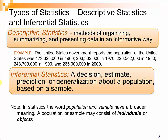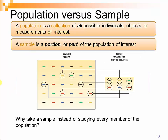Perhaps a graphic representation will help. A population is a collection of all possible individuals, objects, or measurements of interest — in this case, we have a set of cars representing the entire population. A sample, however, is just a portion or part of the population of interest. So we select a sample — in this case, six cars from our entire population. In this small example, we could study the entire population, but in reality, most of the time our population of interest is much greater.